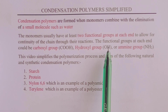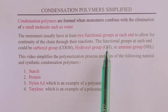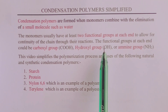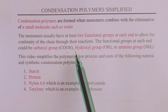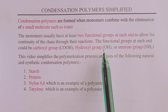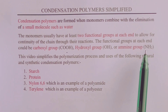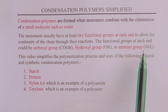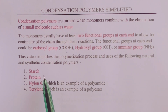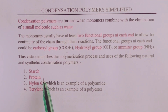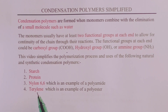The monomers involved in the formation of condensation polymers usually have functional groups at each end, which react with the neighboring molecule to allow for continuity of the chain. The functional groups at each end could either be a COOH, an OH, or a NH2 group. This video simplifies the polymerization process of two natural polymers, starch and protein, and two synthetic condensation polymers, nylon-66 and terylene. Welcome.